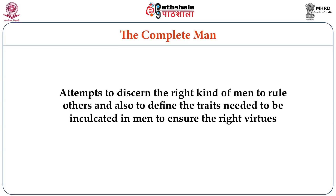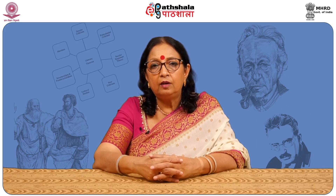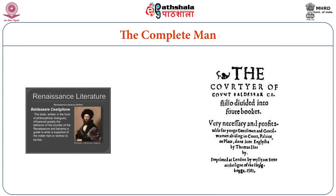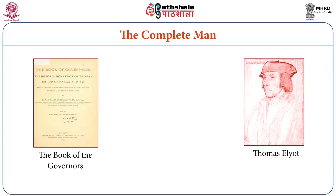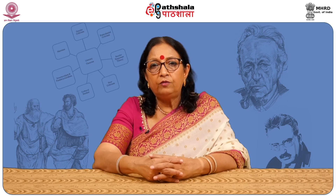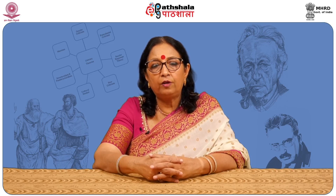There was also the need to define the traits that were needed to be inculcated in men, to ensure that they developed the right virtues. As a result, several works came up on the subject. The first book that comes to mind is Castiglione's The Courtier, written in 1561. Originally in Latin, it was later translated into English and discusses the talents and virtues ideally required in a courtier. Another book of great importance is Sir Thomas Elyot's The Book of the Governor, which was the first book of education in England — a treatise on moral philosophy and education that placed a lot of emphasis on the reading of literature.